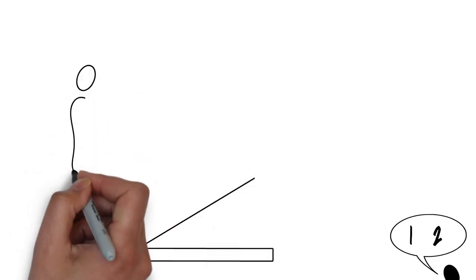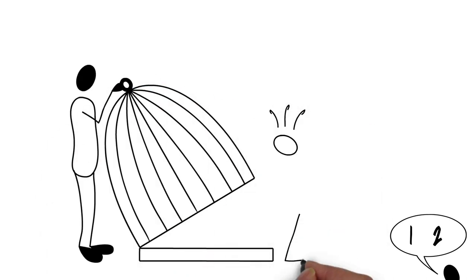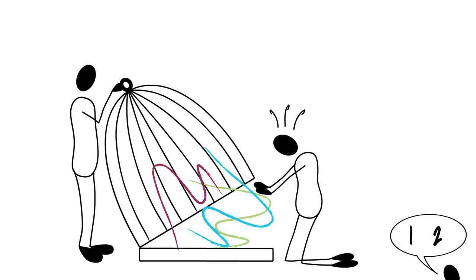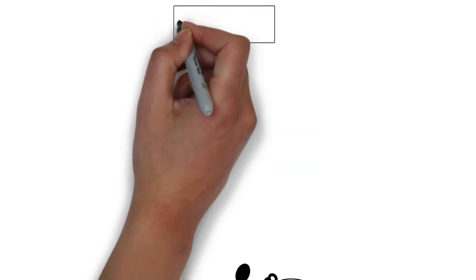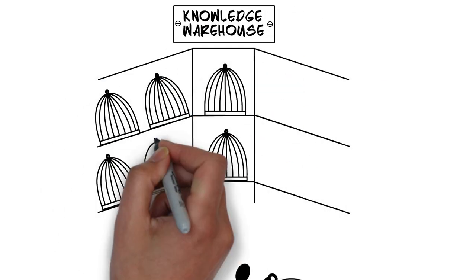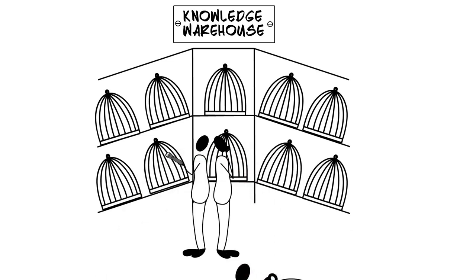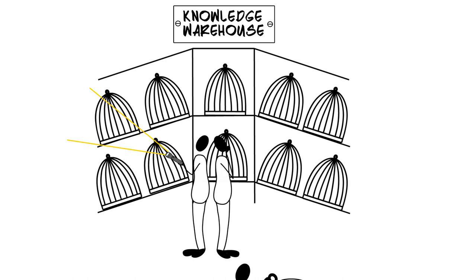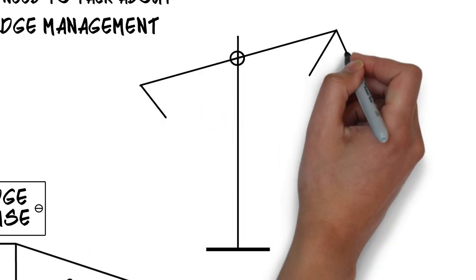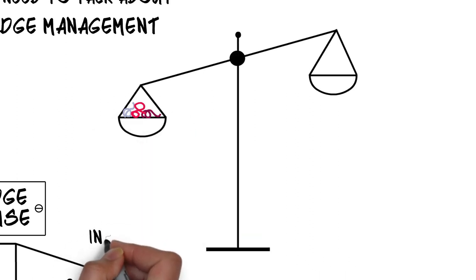Early KM was mostly about capturing knowledge, usually writing things down for others to read. Typical practices included lessons learned databases, best practice programs, and document management systems. The underlying assumptions were that knowledge could be captured, people would go and find it, they would understand it, they would use it, and it would work in the situation where they applied it. In the mid-1990s we realized that these assumptions didn't really hold true.